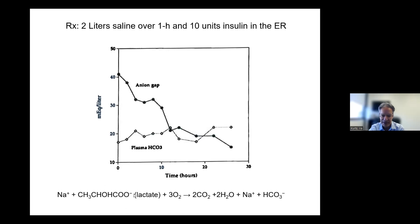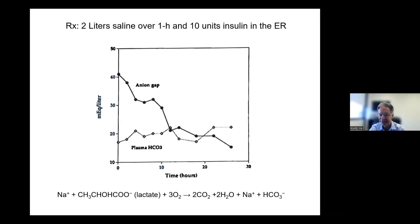We would have expected that if this was due to lactate or any other organic anion, when they're oxidized in the Krebs cycle — lactate to pyruvate, then bicarbonate is generated — the same occurring with beta-hydroxybutyrate or acetoacetate. Whenever they're metabolized after correcting the clinical abnormality, the organic anion is a source of bicarbonate. But that clearly didn't occur here — the bicarbonate stayed the same.